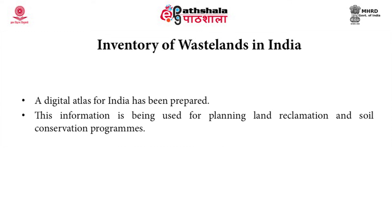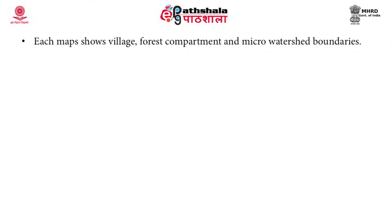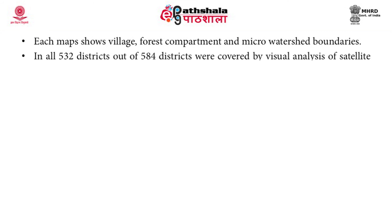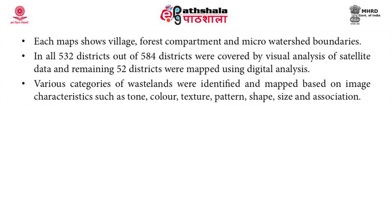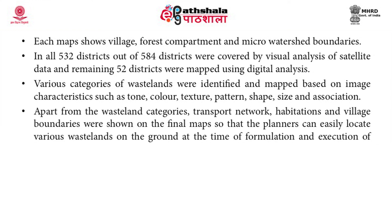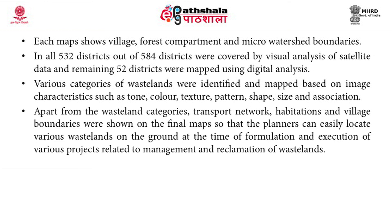This information is being used for planning, land reclamation and soil conservation programmes. In this atlas, each map shows village, forest compartment and micro watershed boundaries. In all, 532 districts out of 584 districts were covered by visual analysis of satellite data and the remaining 52 districts were mapped using digital analysis. Various categories of wastelands were identified and mapped based on image characteristics such as tone, colour, texture, pattern, shape, size and association. Apart from the wasteland categories, transport network, habitation and village boundaries were shown on the final map so that planners can easily locate various wastelands on the ground at the time of formulation and execution of projects related to management and reclamation of wasteland.